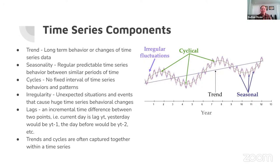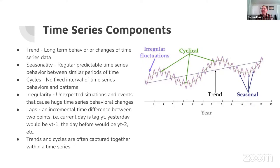Regarding the lag phrase, Y(t) is just the value as of today — the most current value. Y(t-1) is the value of yesterday, i.e., Y at time minus one. It's meant to be written as Y with a subscript t, but essentially Y(t) is just the most current value.